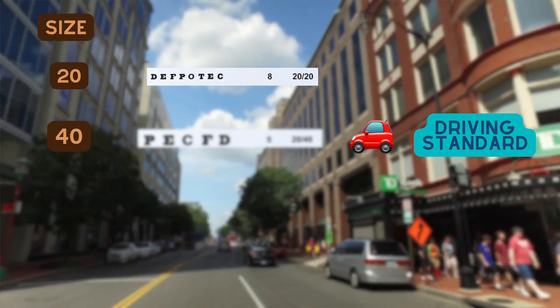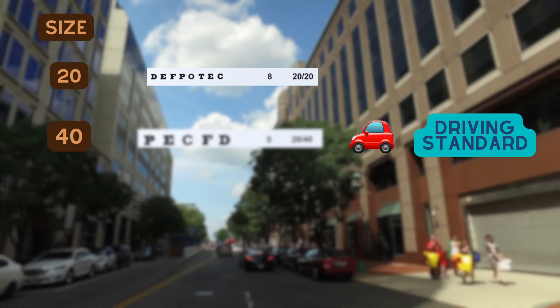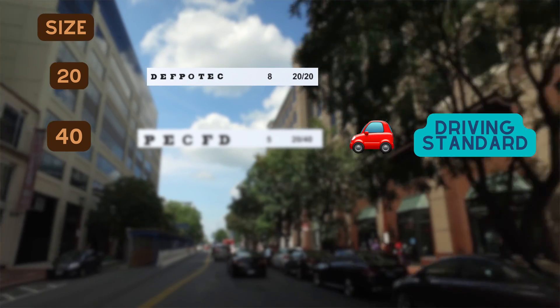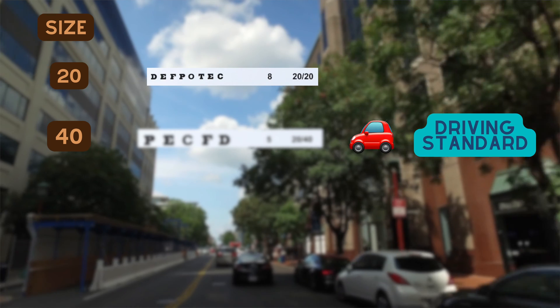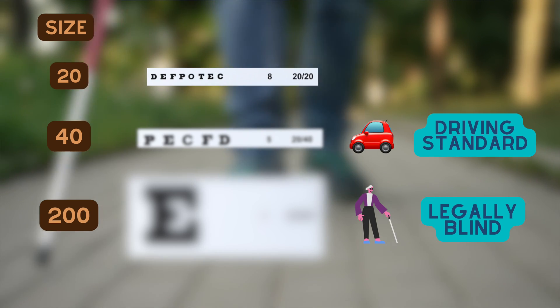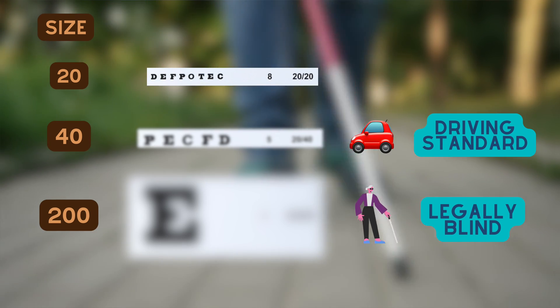20-40 vision is the legal driving standard, which is achievable when you can read letter size 40 at 20 feet, and 20/200 vision is when you are considered to have legal blindness.